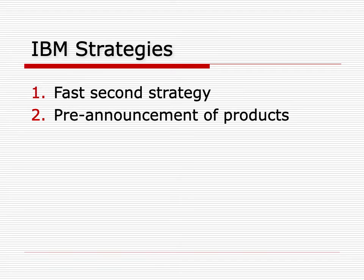Related to the fast second strategy: when rivals developed new, better systems, IBM would announce the release of its own. Customers would often then wait, hurting rival sales. This worked even when the announced system didn't exist. In the 1960s, the System 360 was perhaps the most well-known case, where the announcement came two years before the introduction of the product, and some of the models that had been announced were never produced.